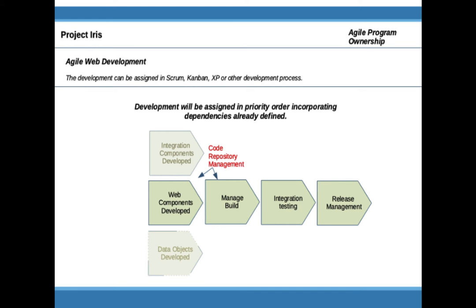The technical aspects of development will vary from organization to organization depending on the tools used. The process of managing the work might be Scrum, Kanban, XP, or some other development process. They all rely on having code reside in a repository management system, and that repository management will be critical to successful rollout. Typically we'll see a managed build, and in some organizations automated integration testing and automated release management. It's been said there is no Agile without continuous integration, so the closer we get to continuous integration, the closer we'll get to true Agile.